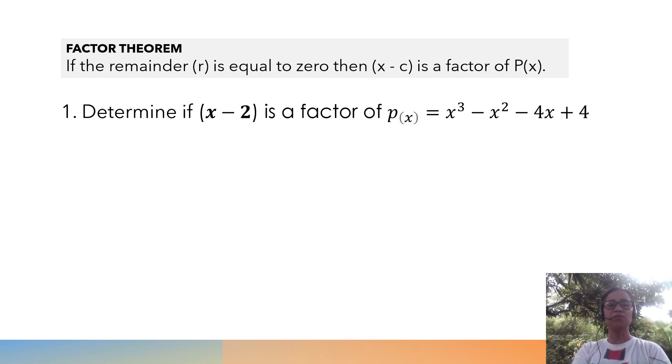Determine if (x - 2) is a factor of the polynomial x³ - x² - 4x + 4. To verify this, we are going to apply Remainder Theorem. In the Remainder Theorem, it is necessary to determine c.